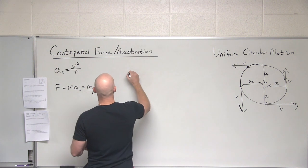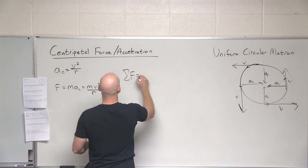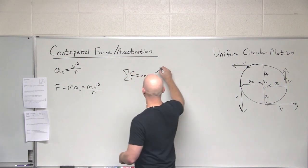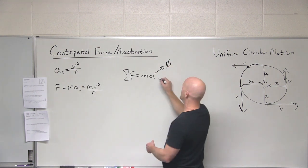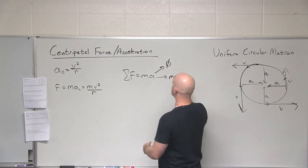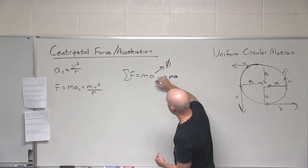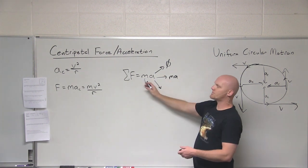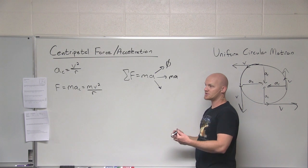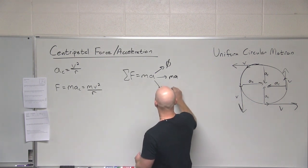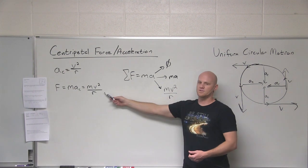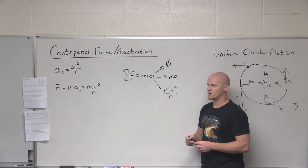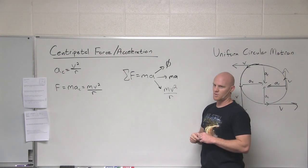Real quick review here. Newton's second law says the sum of the forces equals MA. If there's no acceleration, that means the sum of the forces equals zero. If there is an acceleration, then the sum of the forces in that direction equals MA. And now, we're learning that the sum of the forces equals MA in the radial direction during uniform circular motion is equal to MA in the sense that it's MV squared over R, centripetal force in this case.